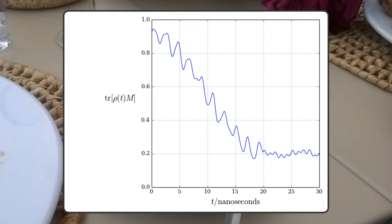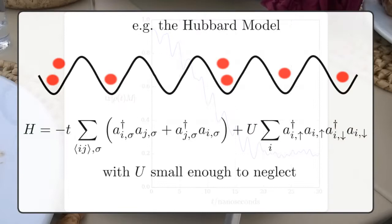In this paper, we ask how long it takes for closed quantum systems to reach equilibrium. More precisely, we look at quantum gases with negligible interactions.